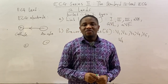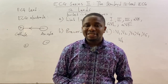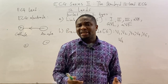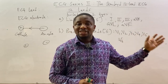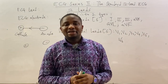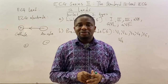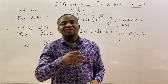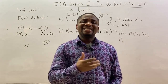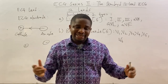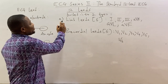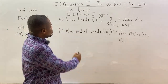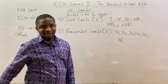Let's move on to the standard 12-lead ECG. A standard 12-lead ECG, as the name implies, has 12 leads divided into two groups. The first group is the limb leads — there are six of them. The second group is the precordial leads, also six.